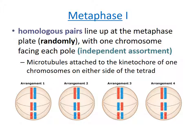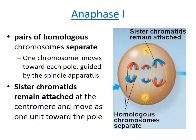After prophase 1 comes metaphase 1. In metaphase 1, the homologous pairs line up at the metaphase plate randomly — you can see the different possible arrangements below. If the red chromosomes came from the mother and the blue ones from the father, you can see the different combinations possible. This random assortment is called independent assortment. Microtubules attach to the kinetochores of one chromosome on either side of the tetrad. In anaphase 1, pairs of homologous chromosomes separate — one chromosome moves toward each pole guided by the spindle apparatus. Unlike anaphase in mitosis, in anaphase 1 the sister chromatids stay attached at the centromere and move as a unit toward the pole.